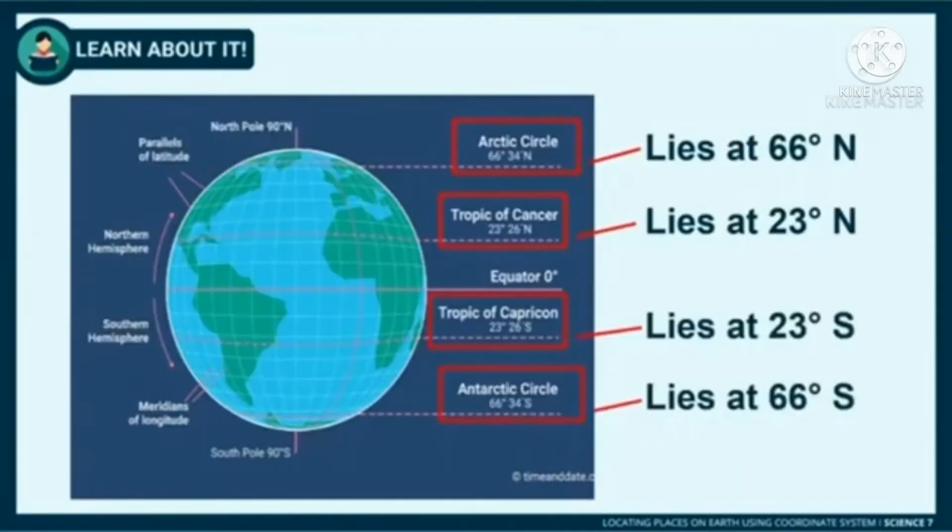Here are some notable latitudes on the globe. The Arctic Circle is at latitude 66 degrees north. All locations falling north of this latitude are said to be in the Arctic Circle. The latitude 23 degrees north is also known as the Tropic of Cancer. It marks the northernmost position of the Earth where the sun is directly overhead at least once a year. This happens during the June solstice, when the Earth's northern hemisphere is tilted towards the sun.